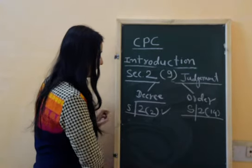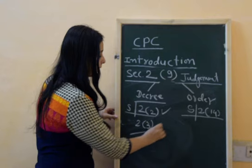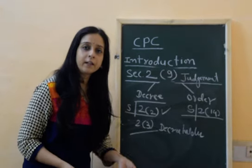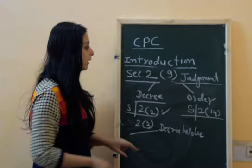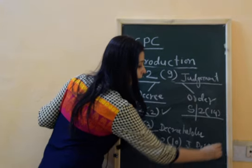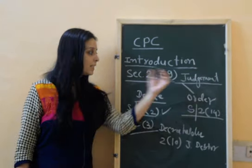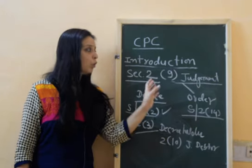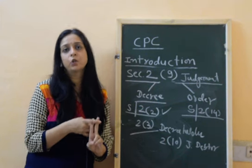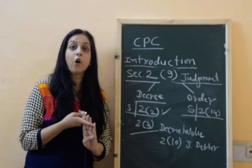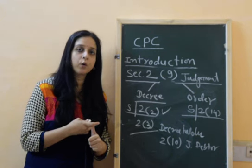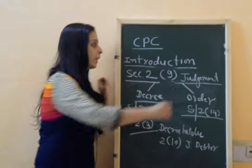To summarize Section 2: Section 2(2) defines decree; Section 2(14) defines order — which is any adjudication that is not a decree; Section 2(9) defines judgment. Section 2(3) defines decree holder, meaning a person in whose favor a decision is given by the court. Section 2(10) defines judgment debtor, meaning the person against whom a decree is passed. These are the important definitions forming the first introductory part of CPC.